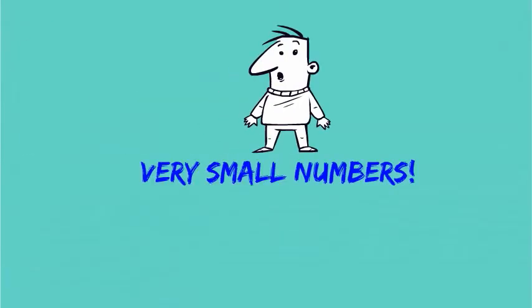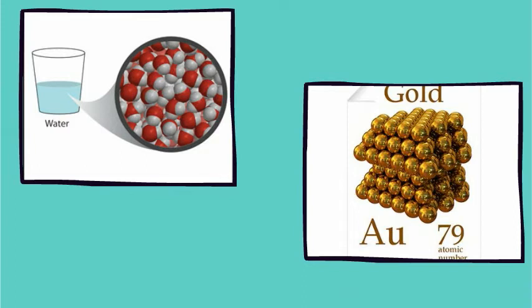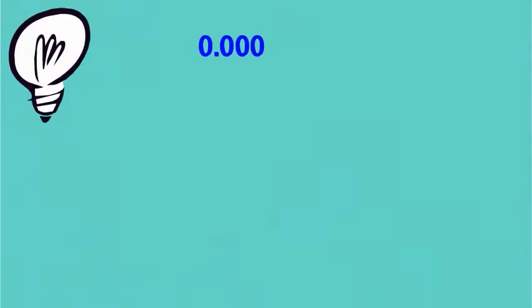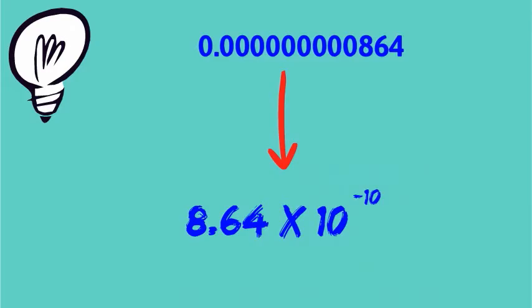We're also going to be working with very small numbers. In this class, we're going to talk about the smallest possible units of matter - atoms and molecules. We can also use scientific notation to write these numbers in a more simple way.